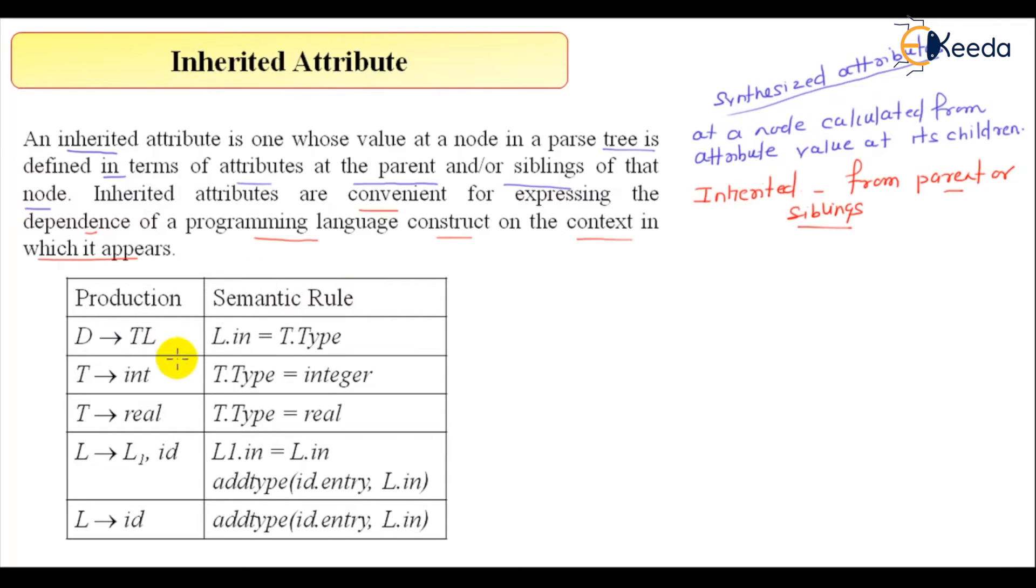Now here, this is the production rule and this is the semantic rule. This semantic rules are basically the semantic rules which is not as usual whatever we have done. This is the grammar that derives a sentence like this, int a, b, c. Now this is the sentence that it will derive and this is nothing but a declaration of variable of type integer or real.